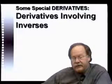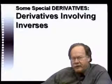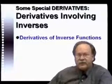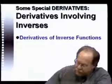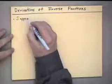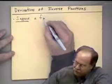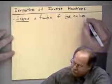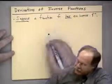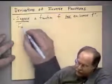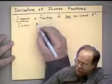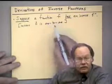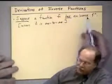We continue looking at special derivatives. We've looked at the derivatives of logarithms, and now we're going to look at the derivatives of functions involving inverses, which will lead us to exponential and inverse trigonometric functions. First, let's look at the derivatives of inverse functions. Suppose a function F has an inverse — denoted F with a minus one in the superscript — that means F is a one-to-one function, such as one that is always increasing or always decreasing.